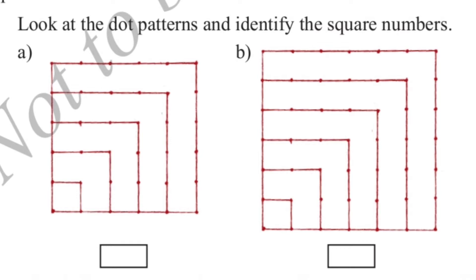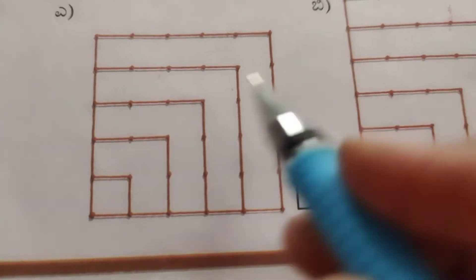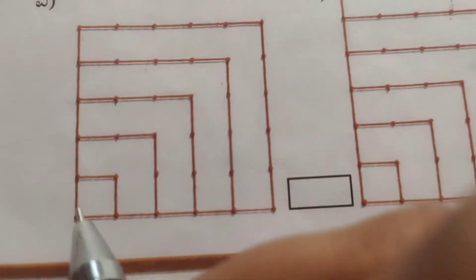Look at the dot patterns and identify the square numbers. Count the dot patterns and write which one is a square number in the box.